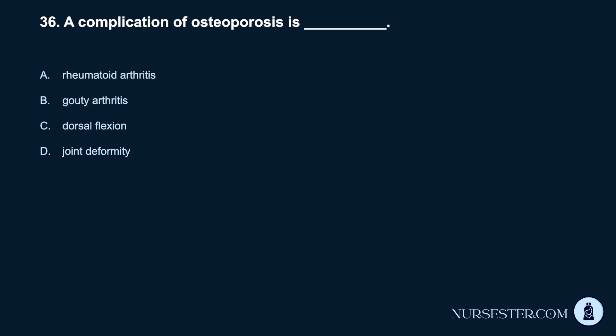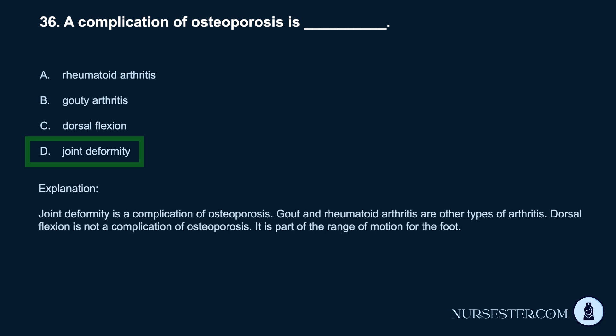Question 36. A complication of osteoporosis is: a. Rheumatoid arthritis. b. Gouty arthritis. c. Dorsal flexion. d. Joint deformity. Correct answer: d. Joint deformity. Joint deformity is a complication of osteoporosis. Gout and rheumatoid arthritis are other types of arthritis. Dorsal flexion is not a complication of osteoporosis — it is part of the range of motion for the foot.